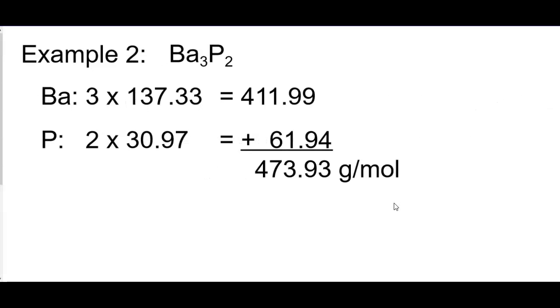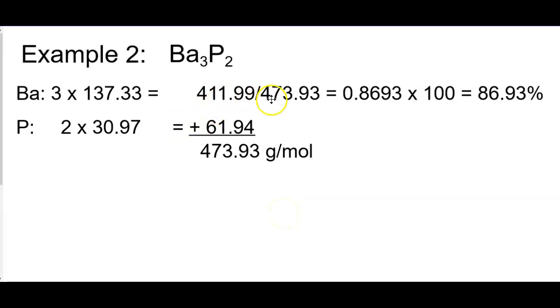Another example would be this example here. Again, I listed how many I had of each. I have periodic table numbers here, so I got parts, and there's my whole. I'm going to take part over whole, part over whole, get an answer times 100.